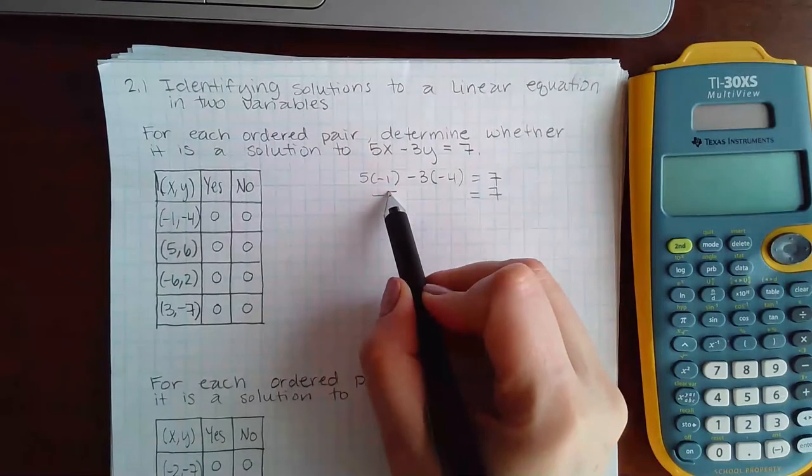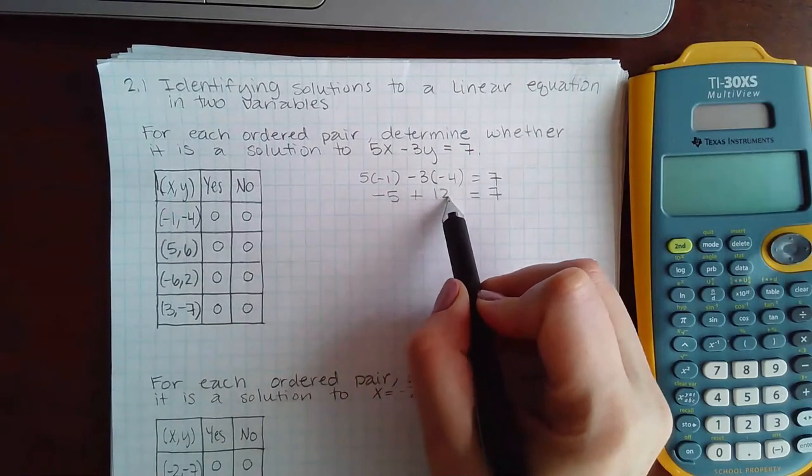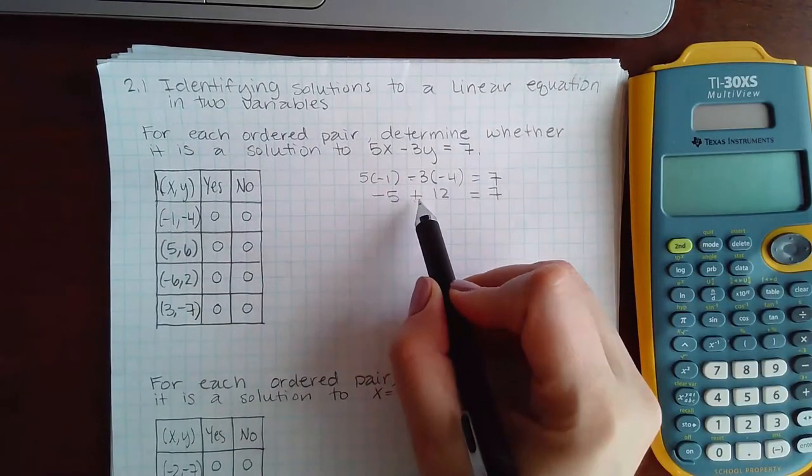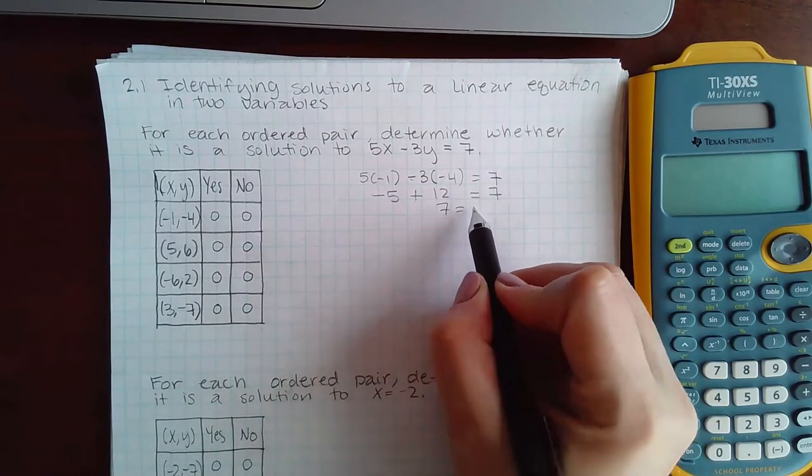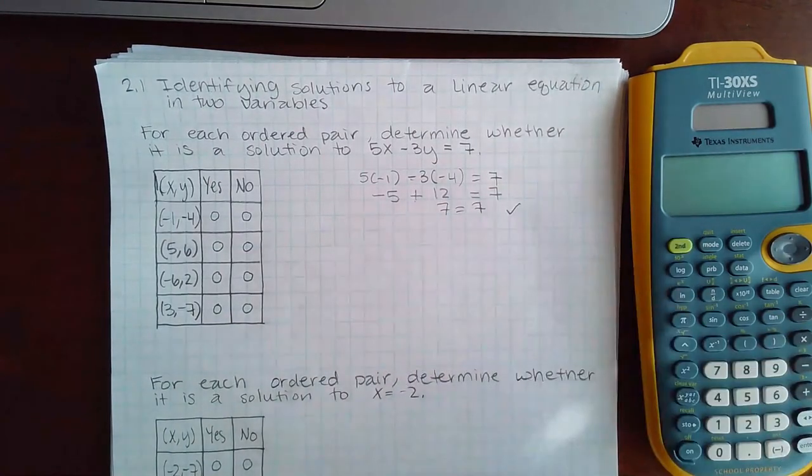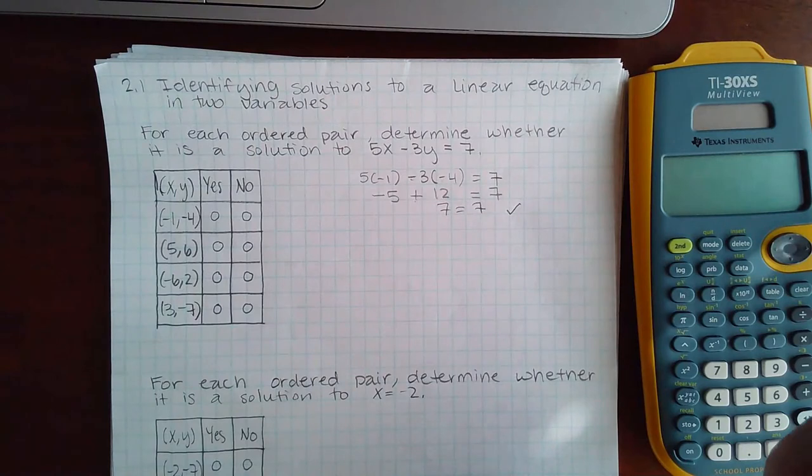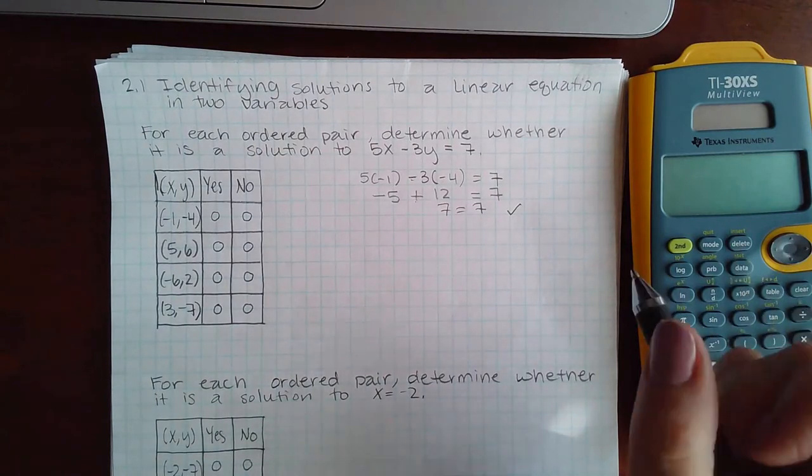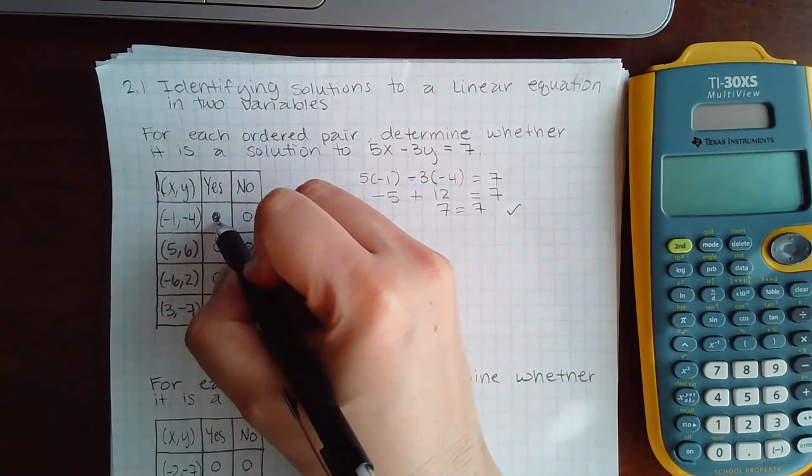After that, it's just a matter of simplifying the left-hand side because the right-hand side is just 7. So I end up with negative 5 plus 12, because a negative times a negative is a positive 12. And I end up with 7 equals 7. This is a true statement. It is equivalent. 7 does, in fact, equal 7. So here I would select yes.